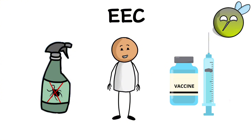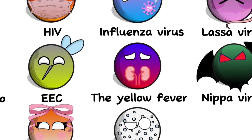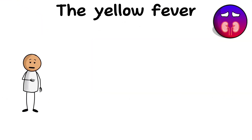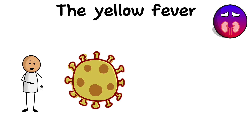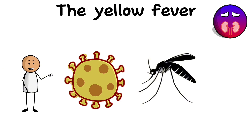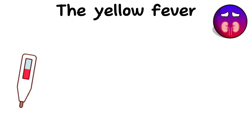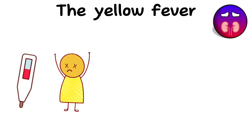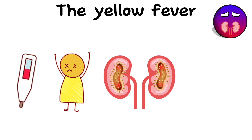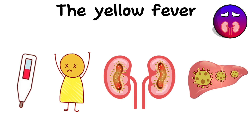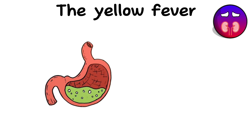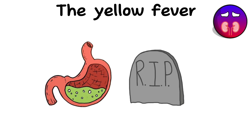Yellow fever. The yellow fever virus belongs to the Flaviviridae family and is a causative agent of yellow fever, an acute viral infection transmitted through the bites of insects, mainly mosquitoes. The disease can manifest in a mild form with symptoms similar to influenza, or in a severe form with pronounced symptoms such as fever, yellowing of the skin and sclera, bleeding from the gums and mucous membranes, as well as liver and kidney disorders. In severe cases, gastrointestinal and genitourinary bleeding may develop, which can lead to death.